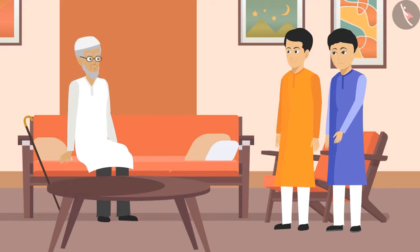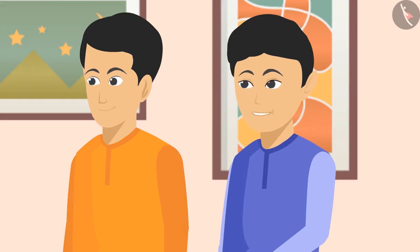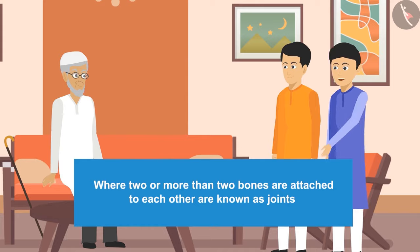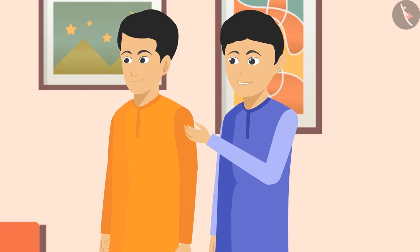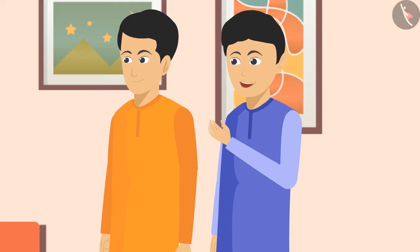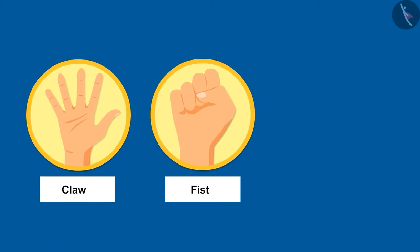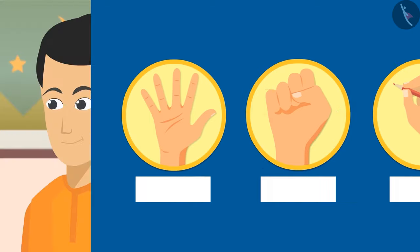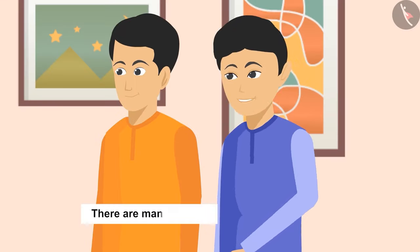'Chacha ji, we can move our hands, legs, or other body parts from the places where two or more bones are attached to each other. These places are called joints. Our palms are one of the most flexible parts of our body — we can spread our fingers like a claw, make a fist, and move it in various ways. We can do this because there are many bones and joints in our palms.'